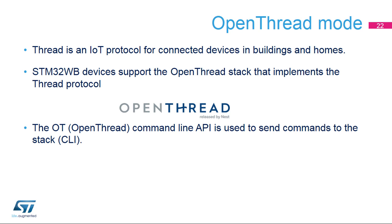Now let's go through Open Thread mode. Thread is an IoT protocol created for building and home automation. While BLE is very efficient for wearables, Thread is the best fit for static objects inside a building. Thread protocol uses IEEE 802.15.4 links to create a mesh network, and devices communicate with each other using the IPv6 network protocol. The thread connectivity offered by the STM32WB devices is based on the Open Thread stack, and the RF tool uses the Thread command line API, or CLI, to communicate with the Open Thread stack.